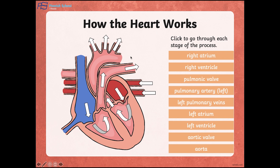Oxygenated blood reaches different parts of the body through the blood vessels. Then, after flowing through all parts of the body, the blood will come back again to the right atrium and this process starts all over again.